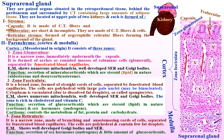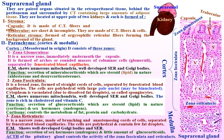Zona reticularis is a narrow zone made of branching and anastomosing cords of cells separated by fenestrated blood capillaries. The cells are polyhedral and contain few fat droplets. By electron microscopy, the cells show well-developed Golgi bodies and smooth endoplasmic reticulum. Function: secretion of sex hormones — androgens — and a small amount of glucocorticoids. Adrenocorticotrophic hormone of the pituitary gland controls the activity mainly of the zona fasciculata and reticularis.